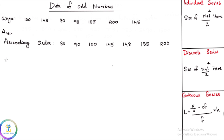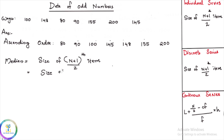What is the equation? Median is equal to the size of (n+1)/2 th item. Here, the number of items — how many items are given? 1, 2, 3, 4, 5, 6, and 7. So the size of (7+1)/2 th item. 7 plus 1 is equal to 8, so 8/2 = 4. That means the 4th item.